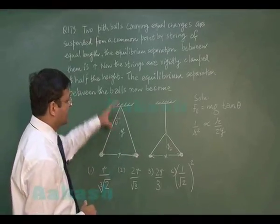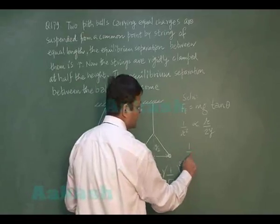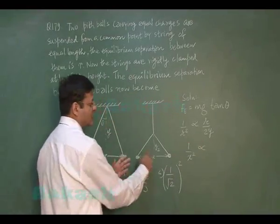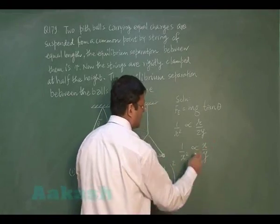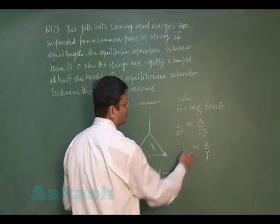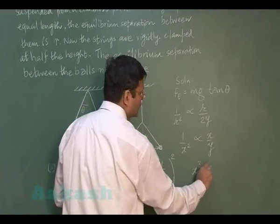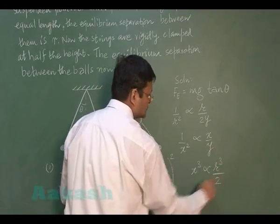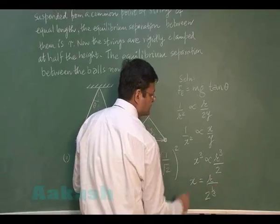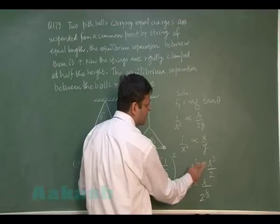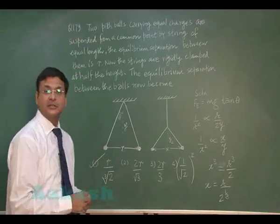In the next case the string length is reduced to y/2. Let the new separation be x. Applying the same formula, 1/x² is proportional to (x/y), so comparing the two cases, x³ is proportional to r³/2, giving x = r/(2^(1/3)). Replacing the proportionality with equality, the most appropriate answer is the first option for question 179.